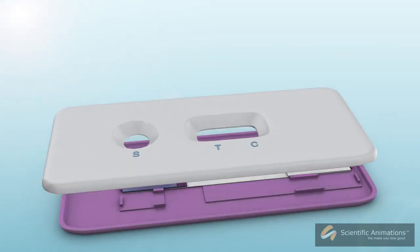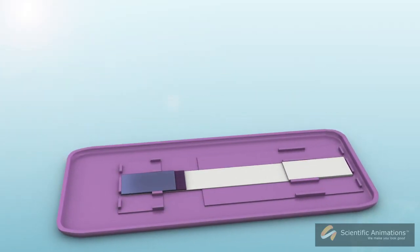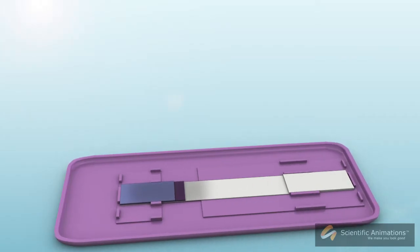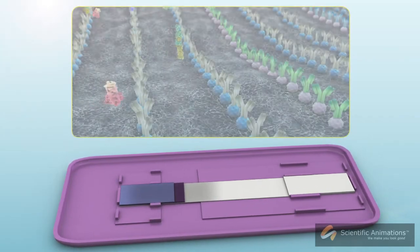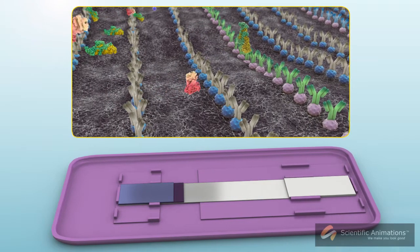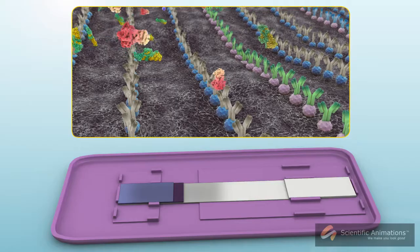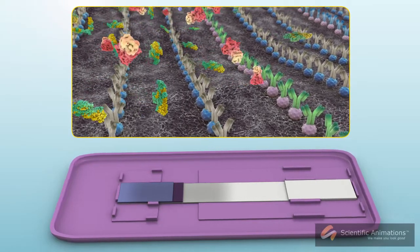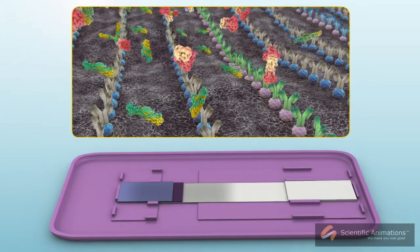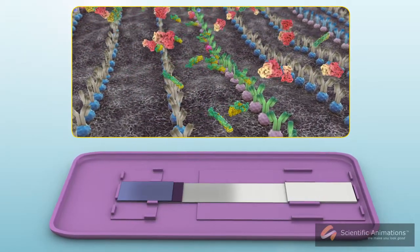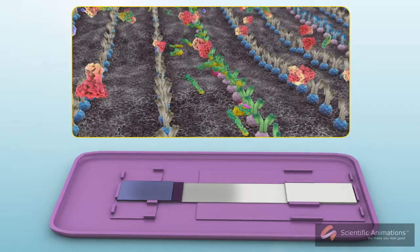Home pregnancy tests use urine samples to test HCG levels. The pregnancy test contains antibodies that bind to HCG, which is connected to an indicator molecule that is usually a pigment.